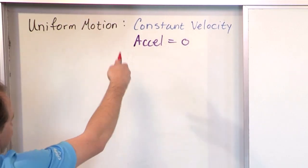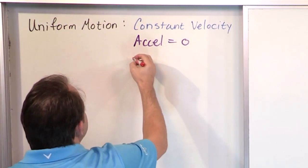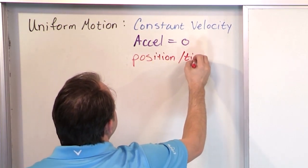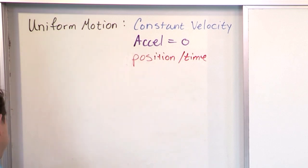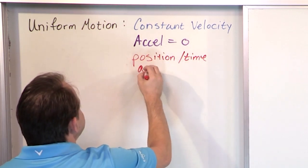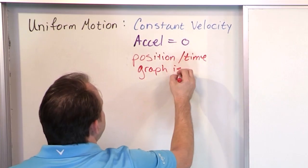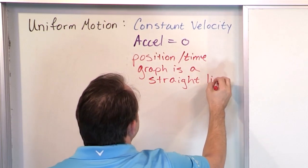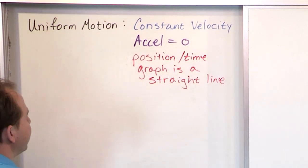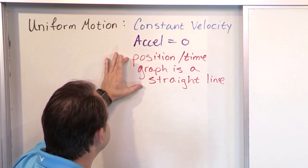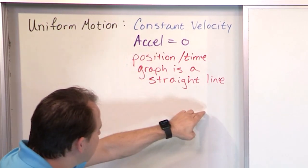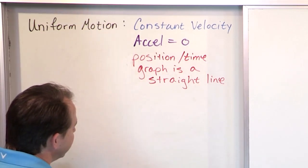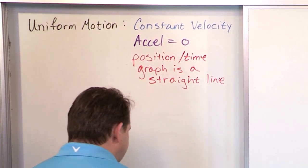The third way to think about it, which is exactly equivalent to the other two, is the position-time graph. When we plot the position versus time graph for uniform motion, it's going to be a straight line. The position is changing, but when the velocity is constant, you're just graphing a straight line in position.